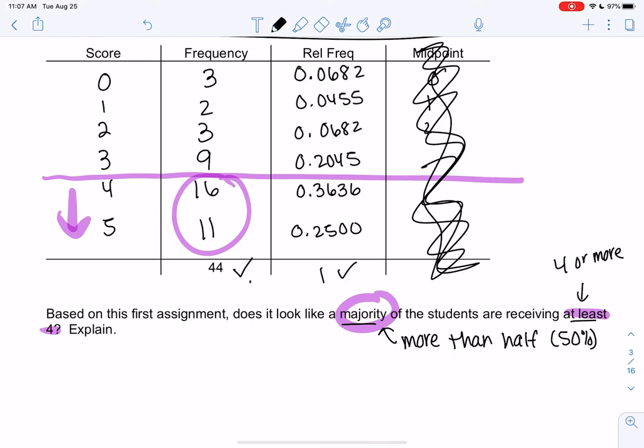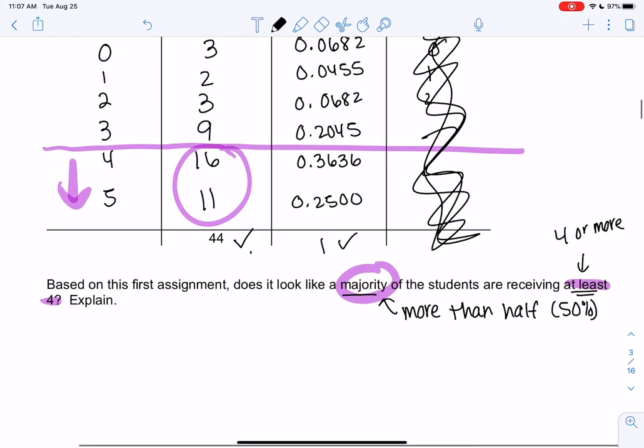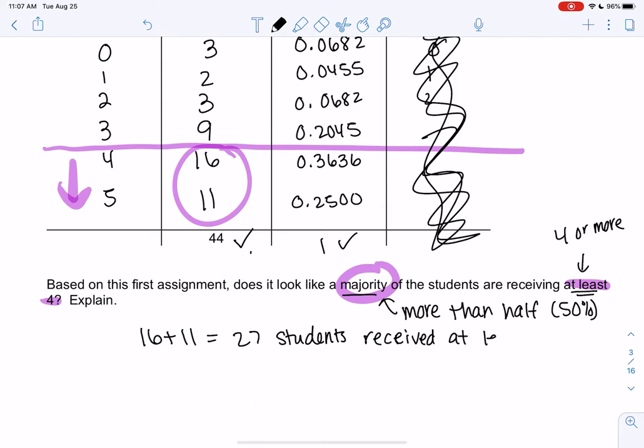It seems like a lot of the students are getting 4 or more, but let's make sure it's at least 50%. I'm going to write that down. At least 4 means 4 or more. At least is probably one of the more challenging words, I think. At least 21 to drink, 21 or more to drink. So at least is that number or more. So 16 plus 11 means what? 27 students received at least 4. Is that more than half? I think so. That seems like more than half of 44. But we can check.